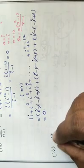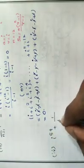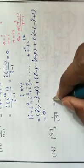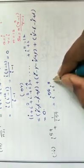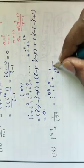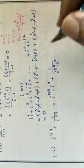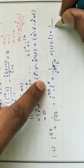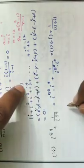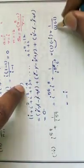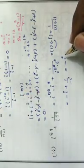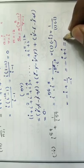Fourth problem: i to the power 59 plus 1 divided by i to the power 59. Writing i to the power 59 as i to the power 56 times i cubed: since i to the power 56 is 1 and i cubed is minus i, we get minus i plus 1 divided by minus i. Now 1 by minus i equals plus i, so minus i plus i equals 0.